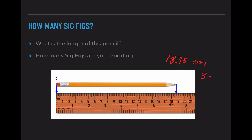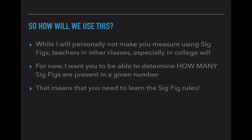We are reporting three sig figs — three figures that we know are significant and accurate — and one estimate. While I will personally not make you measure sig figs like we did on the last slide (that's just an example of how you would go about doing that in a college course), you will eventually be held responsible for that, especially if you go into science as a career. For now, I just want you to be able to tell me how many sig figs a number value has, which means you need to know the rules for sig figs.